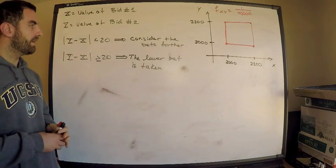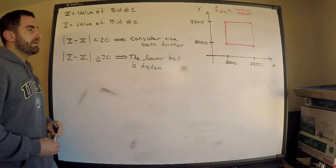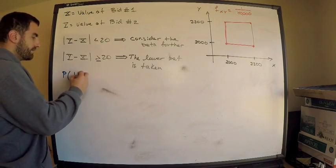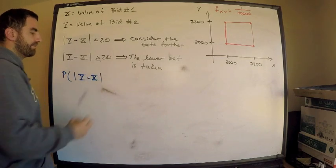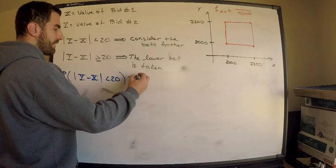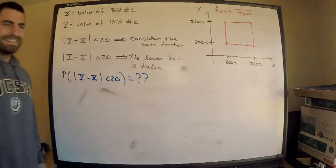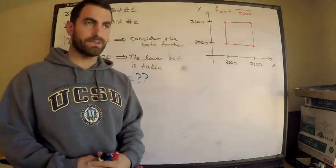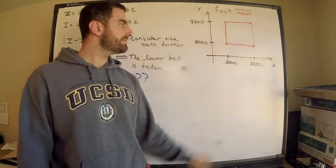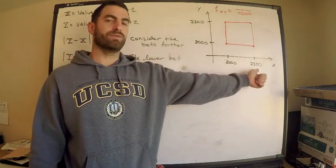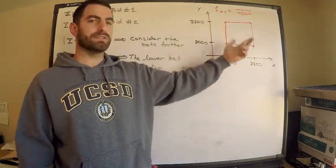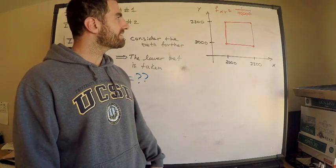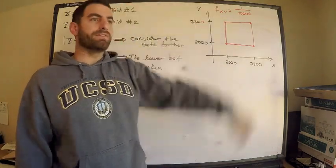So, the question wants me to find the probability that the absolute value of y minus x, my two random variables which represent the values of the bids, is less than 20. This is where you want to go to the picture. And I've already have the density function here because you know that for a uniform density function, it's just one over the area of the region. This is the area of the region because I know that x is between 2,000 and 2,200. Y is between 2,000 and 2,200. The area of this region, it's actually a square, and so, it's 1 over 200 squared, which is 40,000. So, the density function is 1 over the area.